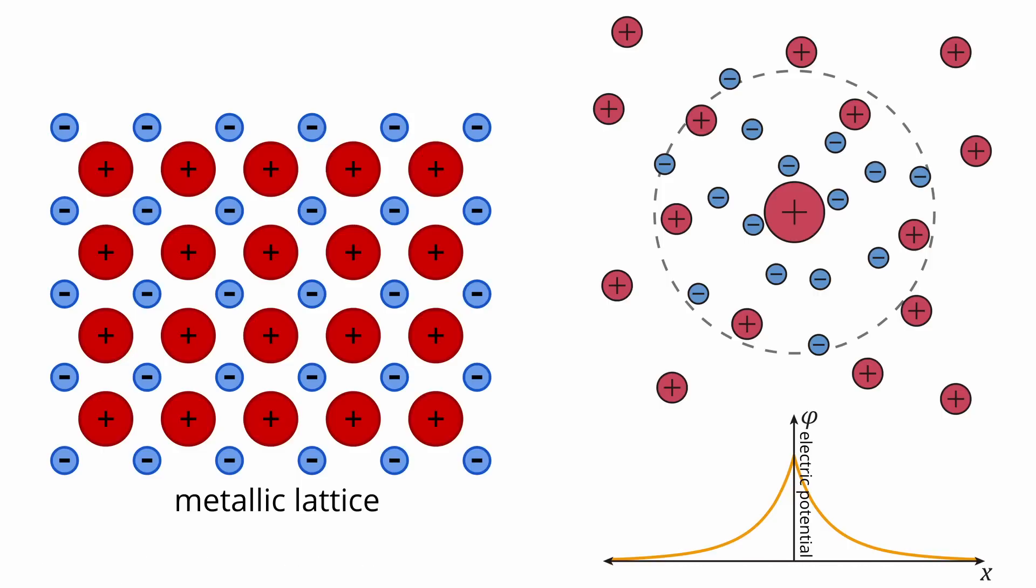One common feature that both tokamaks and LENR experiments could share is screening effects. In LENR, the metal lattice may significantly reduce the Coulomb barrier, making nuclear reactions more likely at lower temperatures.